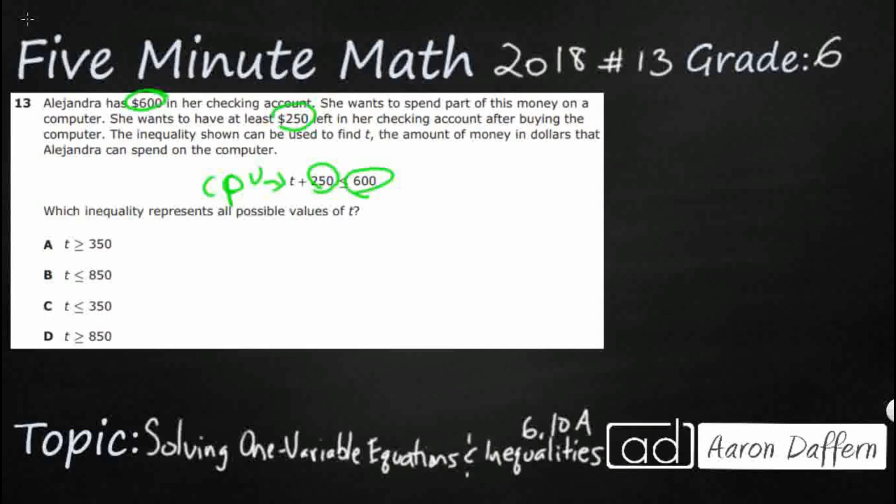So the computer plus the $250 she wants left needs to be equal to or can be less than the $600 that she already has in her checking account. So we need this T to equal this computer. It's fairly complicated, but we already actually have the inequality for us. T plus $250 is less than or equal to $600. So we need to find the inequality that represents all possible values of T.